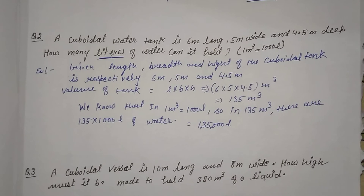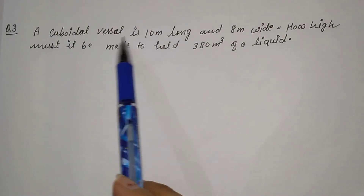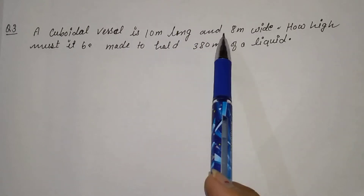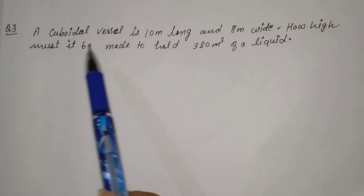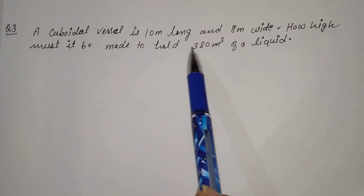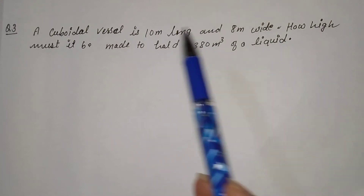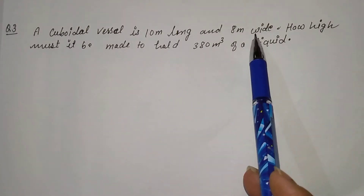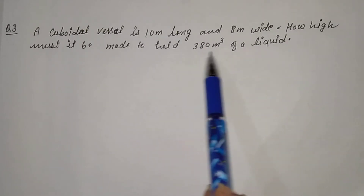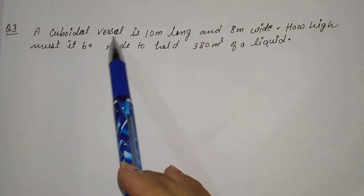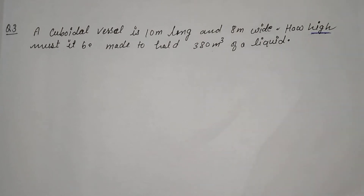Now come to question number 3. A cuboidal vessel is 10 meters long and 8 meters wide. How high must it be made to hold 380 meter cube of liquid? Length is given, breadth (width) is given, volume of the vessel is given — and we need to find the height of the vessel.